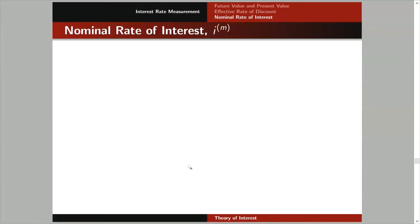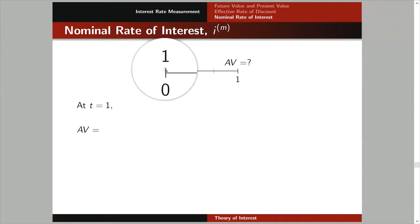Let's go back to the nominal rate of interest. Let's have this time diagram — this is only one year. I divided one year or one period into three. So we get the accumulated value of one unit, using the nominal rate of interest payable three times a year, that's our I upper 3. At t equals 1, the accumulated value of one unit at time zero is equal to the following.